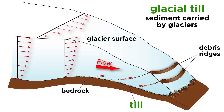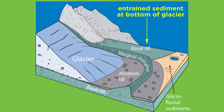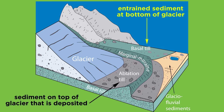There are many types of glacial sediment that are all generally referred to as glacial till, but there are two main types: basal till, which encompasses the entrained sediment at the bottom of the glacier, and ablation till, which refers to sediment that was transported near or at the top of the glacier and later deposited when the ice melted.